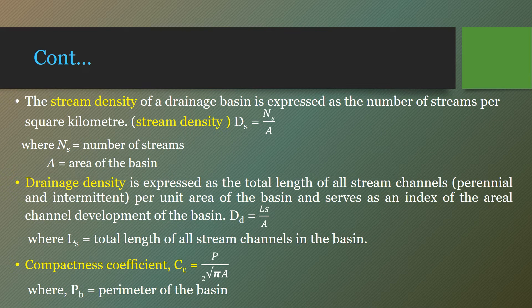Stream density of a drainage basin or catchment area is expressed as the number of streams per square kilometer. Drainage density is defined as the ratio of total length of all streams in the catchment divided by its area — that is, total stream length divided by catchment area equals drainage density.